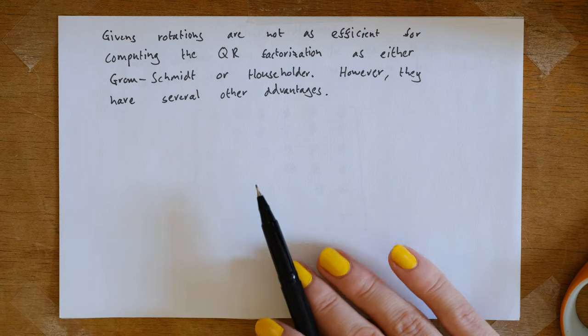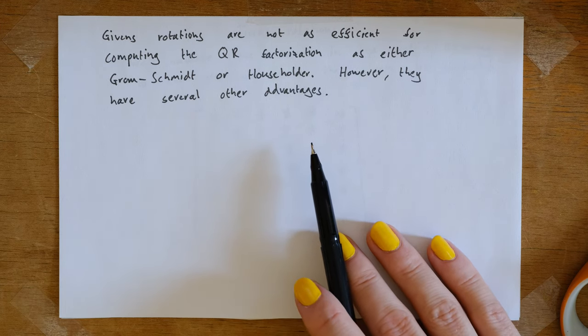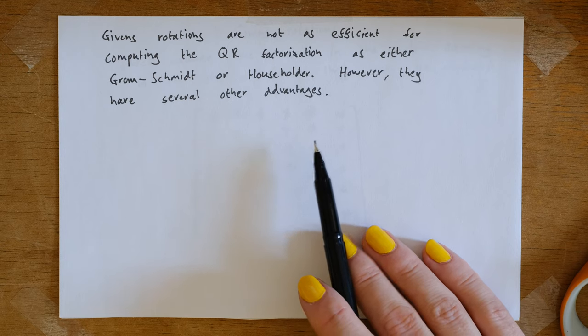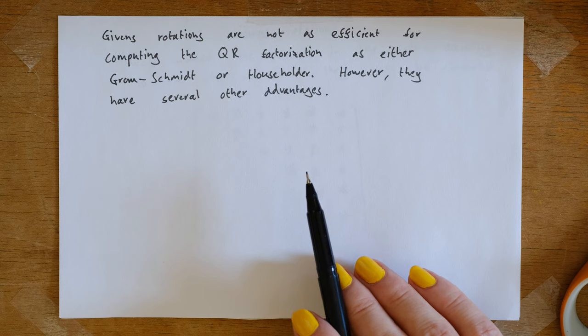In general, Givens rotations are not as efficient for computing the QR factorization as either the Gram-Schmidt method or the Householder method. However, they're worth knowing about because they have several other advantages.